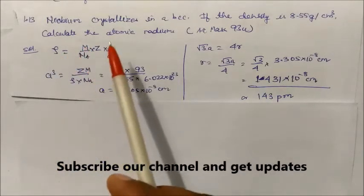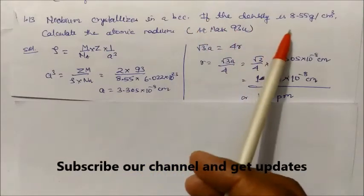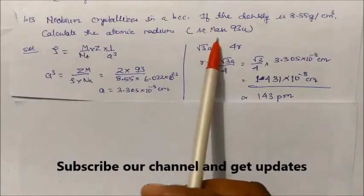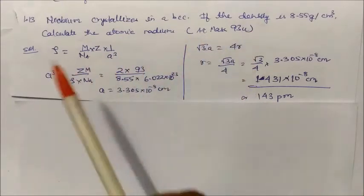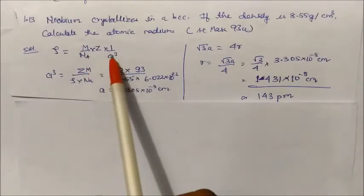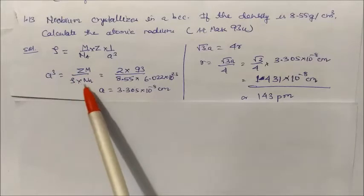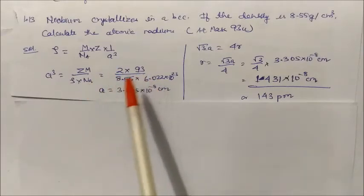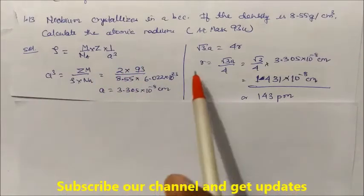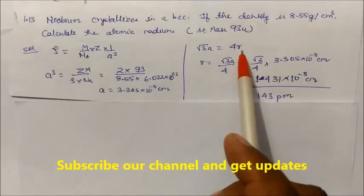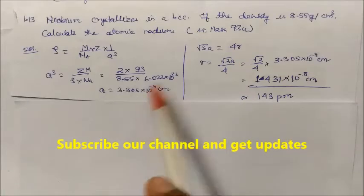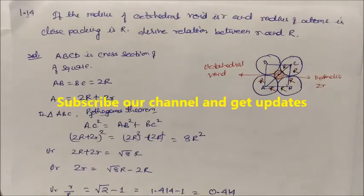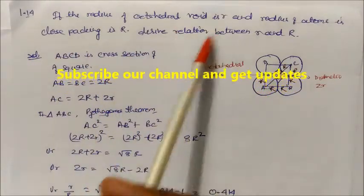Niobium crystallizes in a BCC structure. Given density is 8.55 g/cm³ and atomic mass of niobium is 93 u. Using density = ZM / (a³ × Nₐ), with Z = 2 for BCC, M = 93, and density = 8.55, we solve for edge length a. Then using the BCC relation √3 × a = 4R, we substitute the value of a to get the atomic radius as 143 pm.